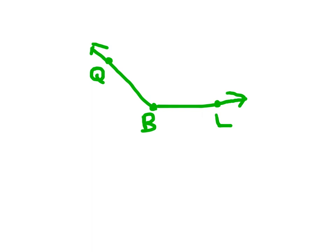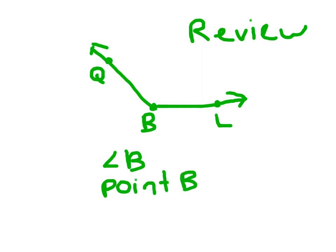Let's look at one last angle. Let's review and go for one last angle. This angle, if we name it just by its vertex, is angle what? B. Point B is the what? Point B is the vertex of this angle.